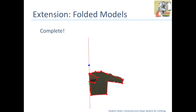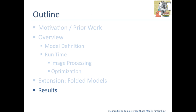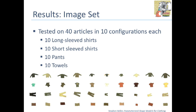This can be done iteratively for the whole folding procedure. We tested this on a dataset with 40 articles of clothing, each in 10 configurations, giving a 400 image dataset. We had 10 long sleeve shirts, short sleeve shirts, pants, and towels.